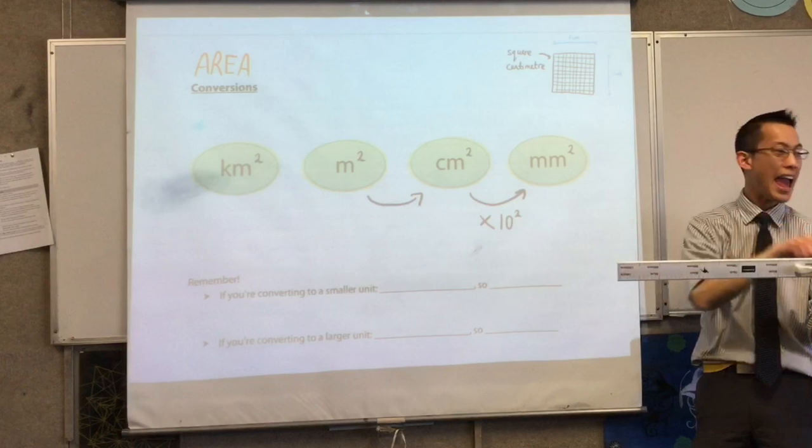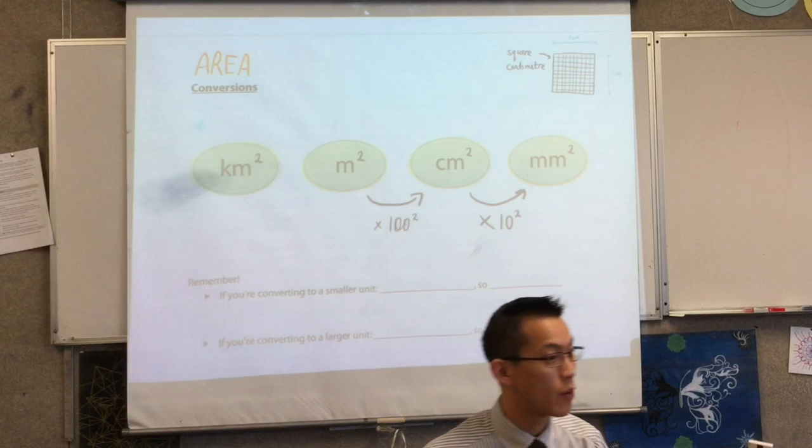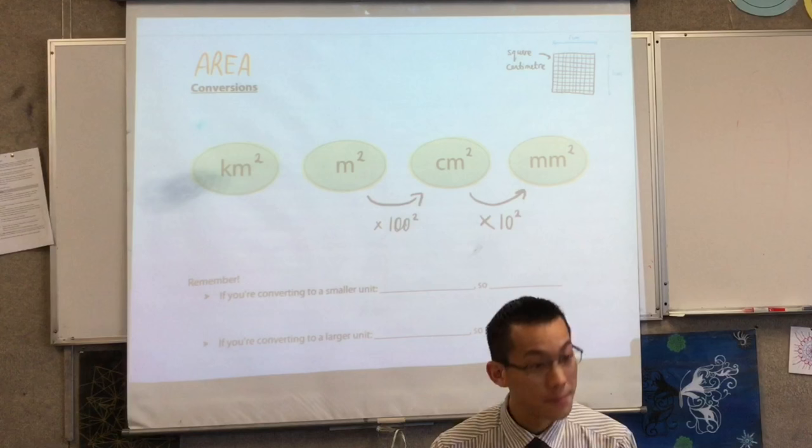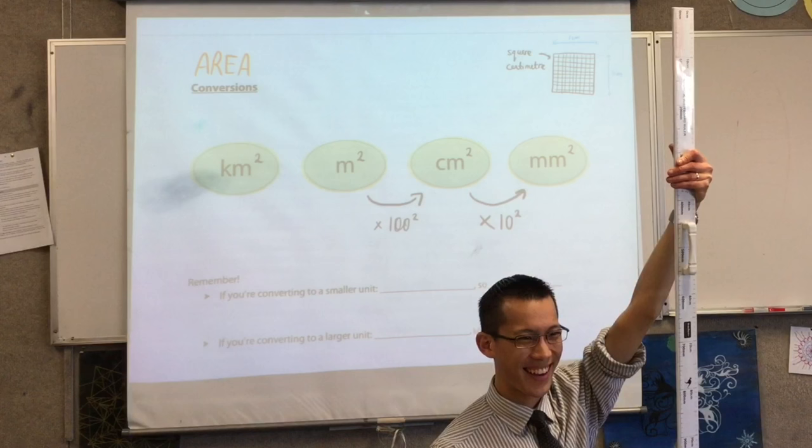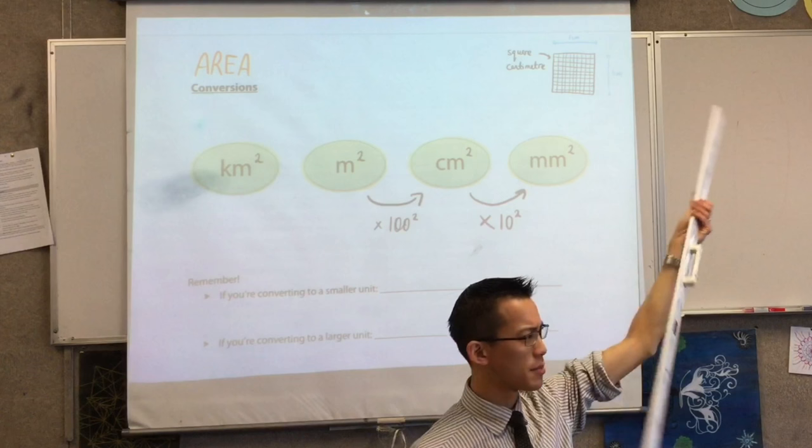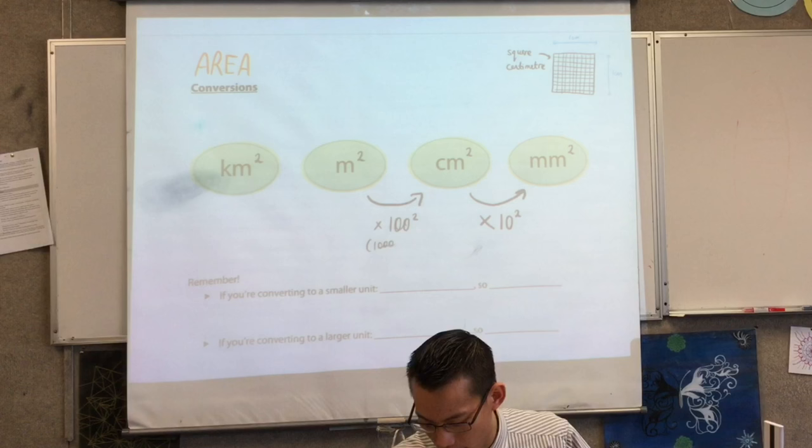A hundred squared. A hundred this way and a hundred this way. So I'm going to multiply by a hundred squared. By the way, that's ten thousand, right? This is where that hectare idea comes from. Yes, it's a hundred times a hundred thousand. It's ten thousand, isn't it? Ten thousand, four zeros. Whereas this is a hundred. Makes sense.